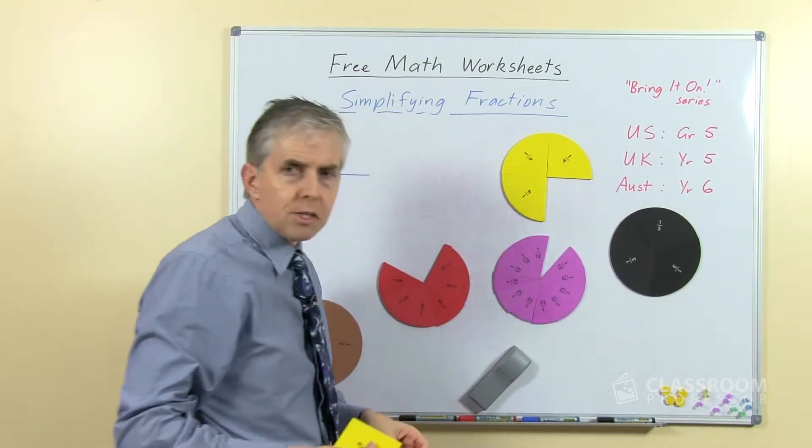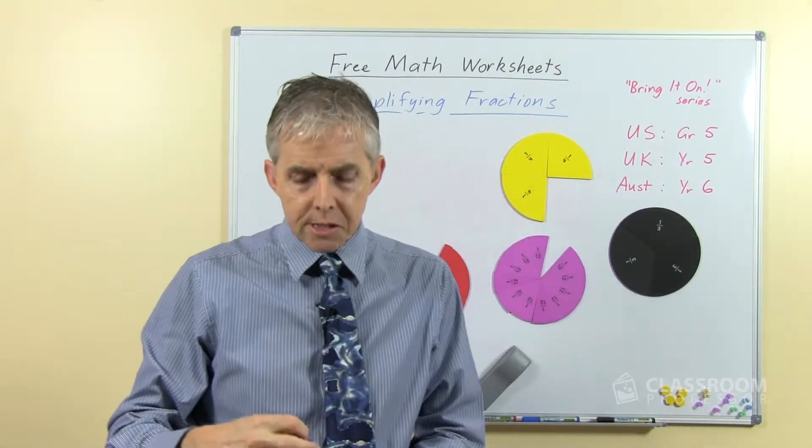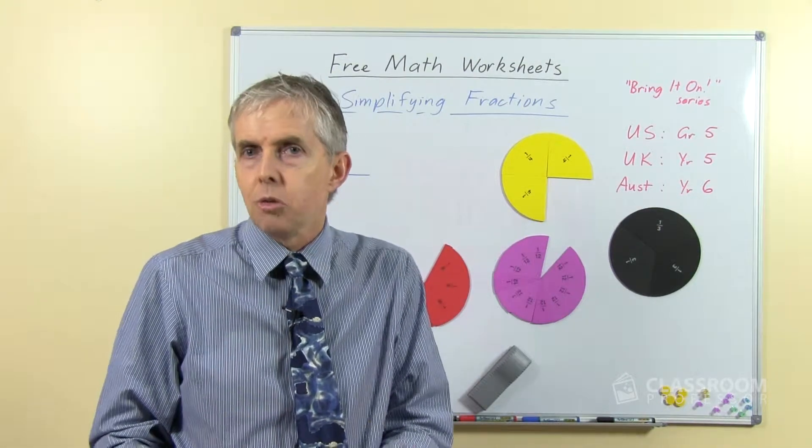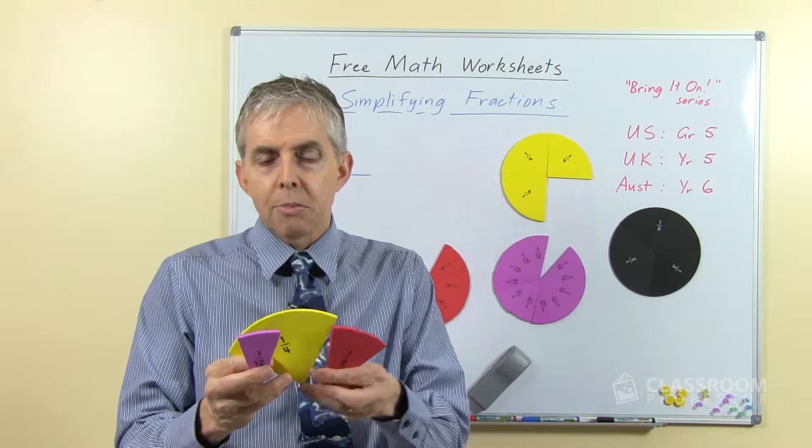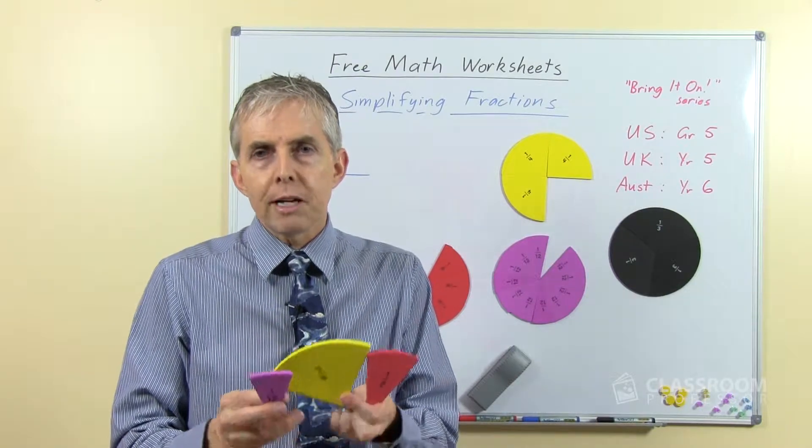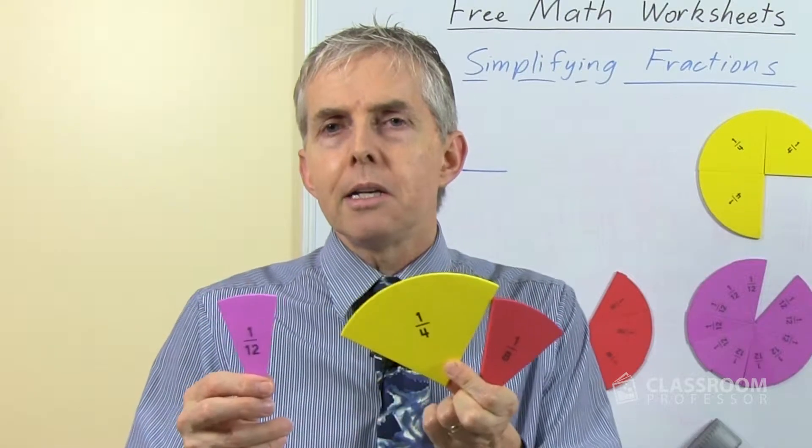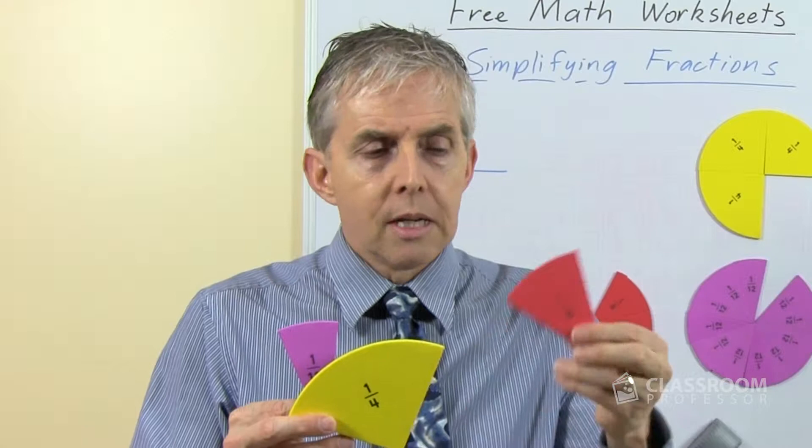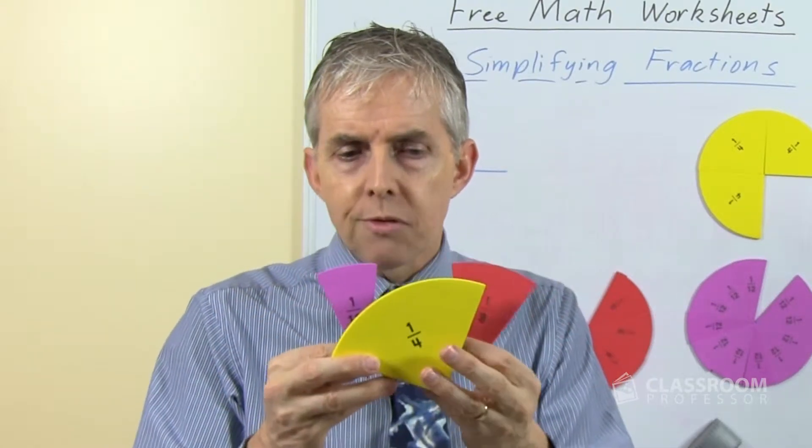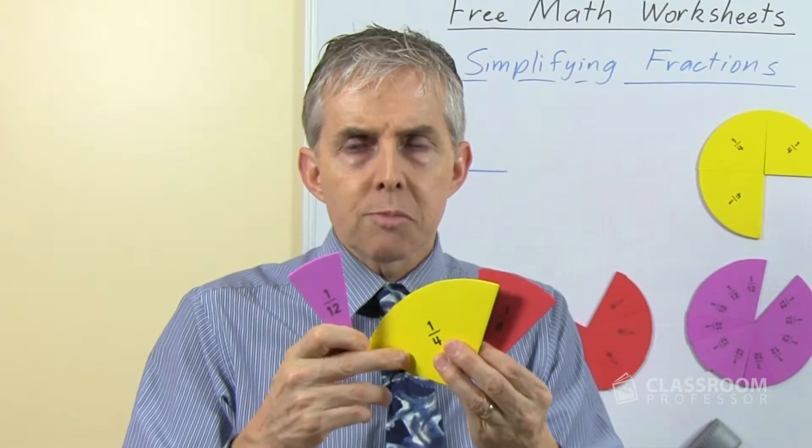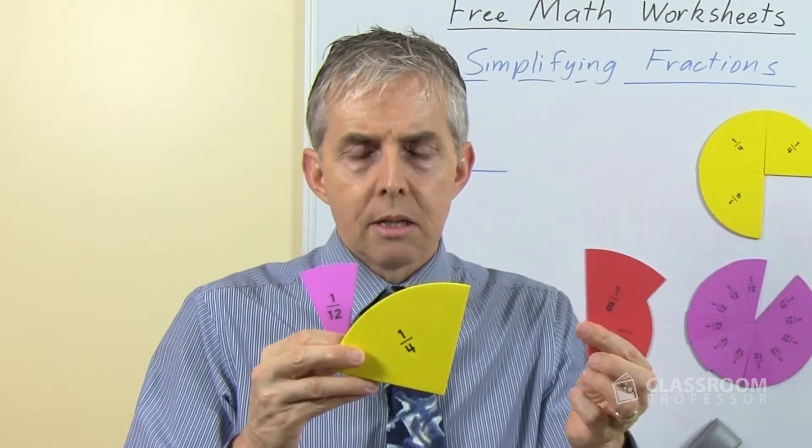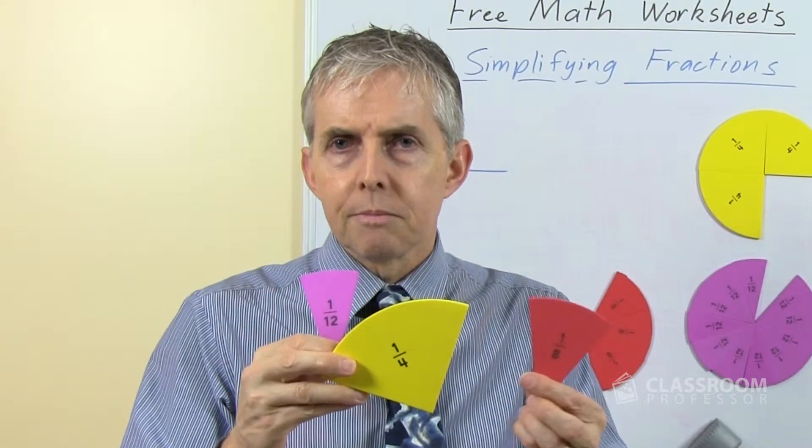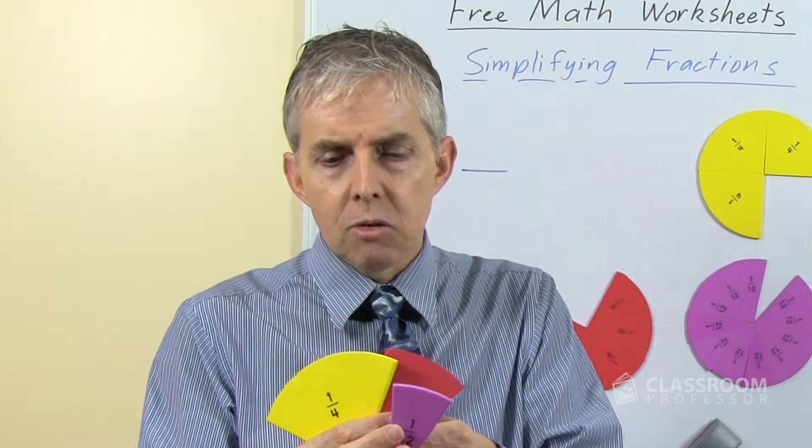Now as the students are learning about fractions, they will hopefully have noticed or will have had it pointed out to them, that the fractions come in different sizes, and that the sizes relate in some way to the denominators themselves. So this has the denominator eight, this is the denominator four. Four is a smaller number than eight, but the fraction is bigger, and then of course if I put these in order, we have twelfths, that's an even bigger number but an even smaller fraction.